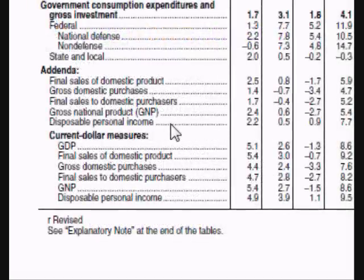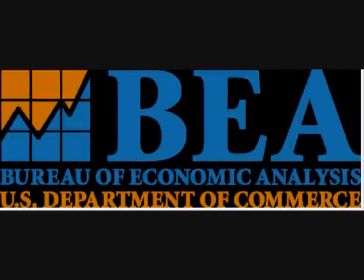The next section is disposable personal income. When people have more disposable income, they tend to spend more, which increases demand. The last part of the table has the main sections listed again, only this time with current dollars instead of real dollars — in other words, these totals include changes in price from inflation added back in.